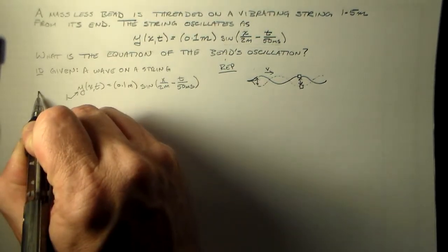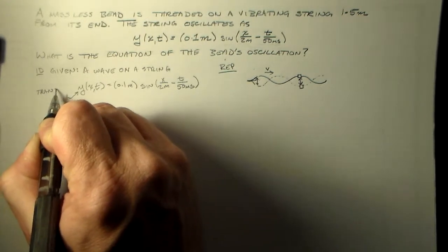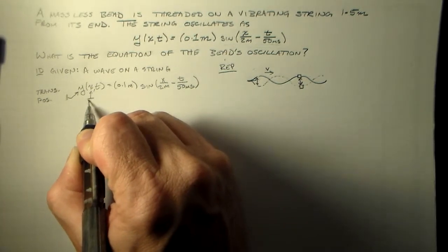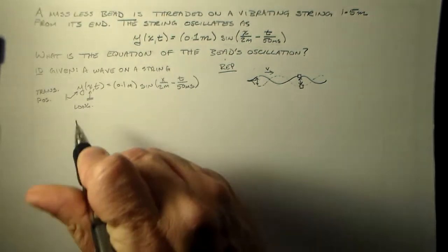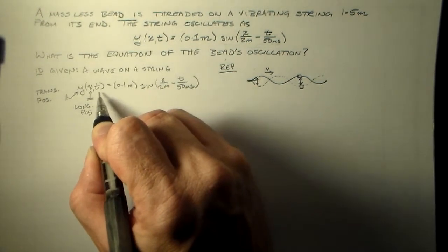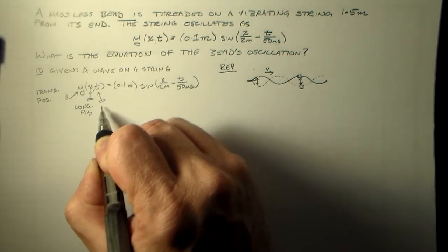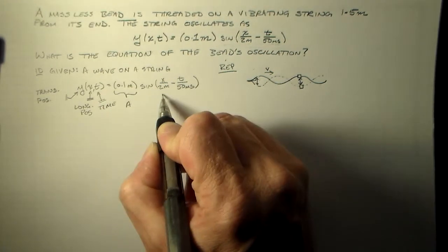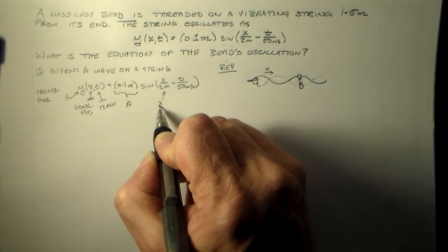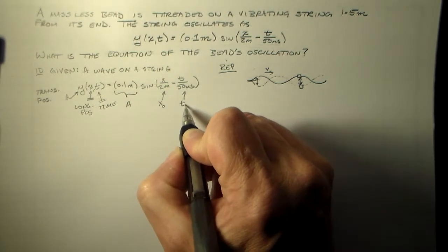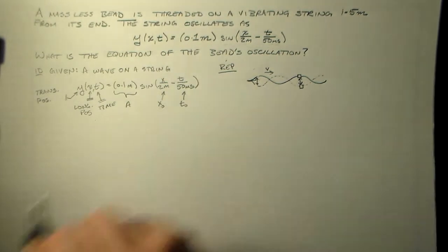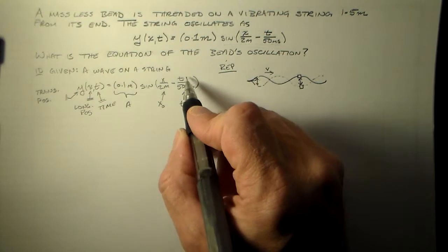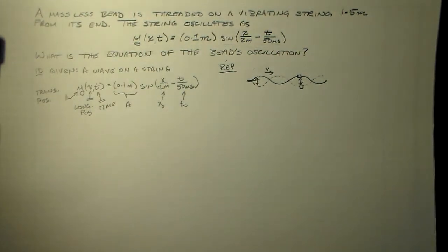And here, that's your transverse oscillation. That's your transverse position. And this is your longitudinal position. And that's your time. You'll notice this is your amplitude. Well, we'll call that x0 and we'll call that t0. But 2π over this is your k vector. And 2π over this is your frequency.